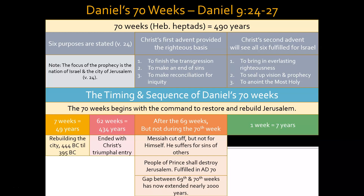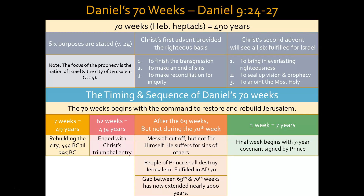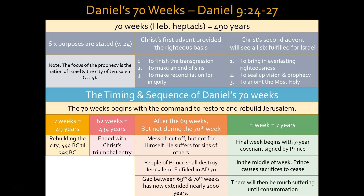There is a gap between the 69th and the 70th week that has extended now for nearly 2,000 years. Verse 27 tells us that a Roman Prince will someday come and begin this final week: 'He shall confirm a covenant with many for one week. But in the middle of the week, he shall bring an end to sacrifice and offering. And on the wing of abomination shall be one who makes desolate, even until the consummation which is determined is poured out on the desolate.' The 70th week begins with this Roman Prince signing a covenant with the nation of Israel for a seven-year period, but in the middle he will cause sacrifices to cease, followed by much suffering until the final consummation.